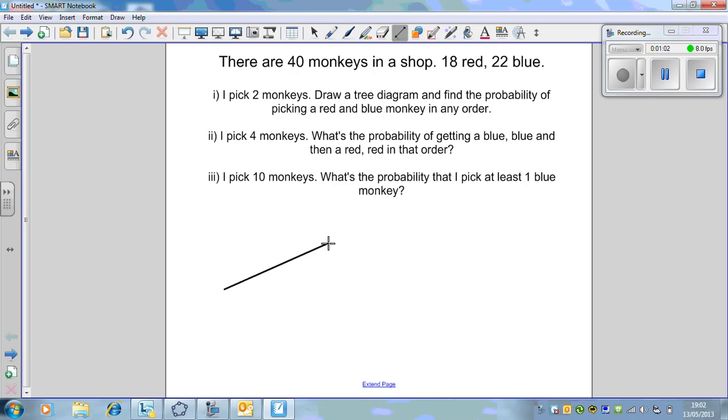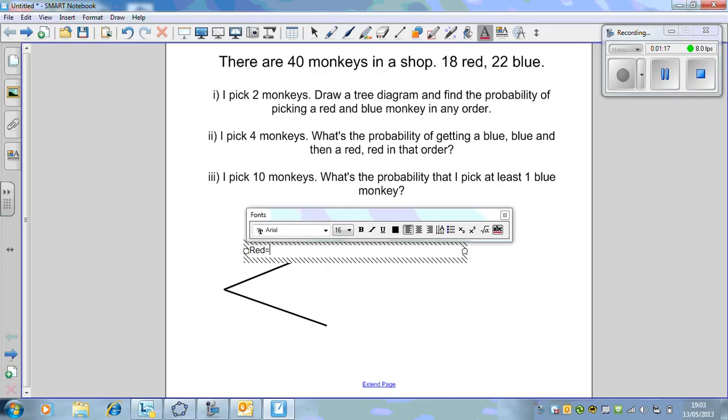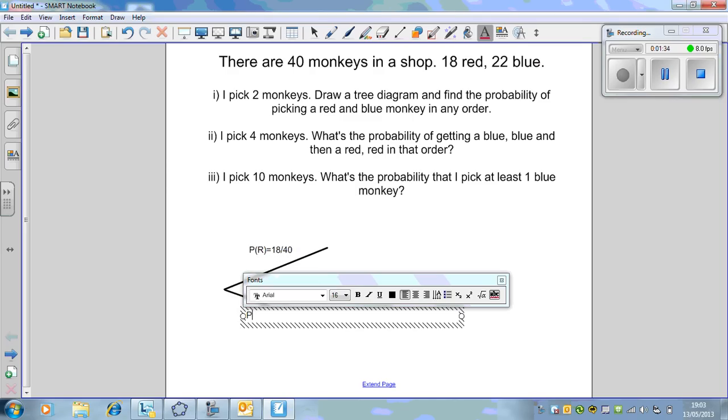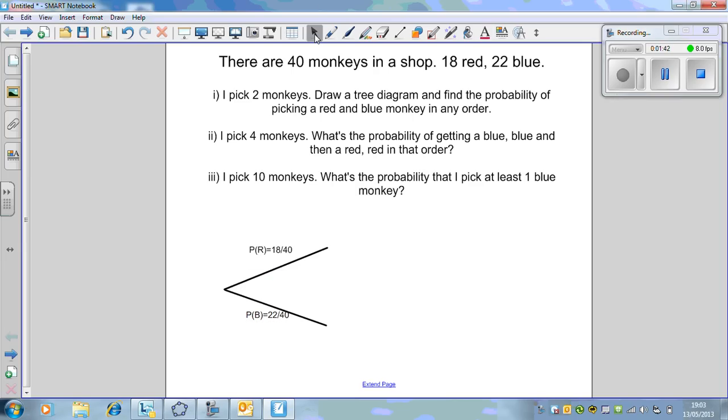The first question is that I pick two monkeys. Draw a tree diagram and find the probability of picking a red and blue monkey in that order. So if we draw a tree diagram, the first branch is going to be red or blue. The probability of red is 18 out of 40.